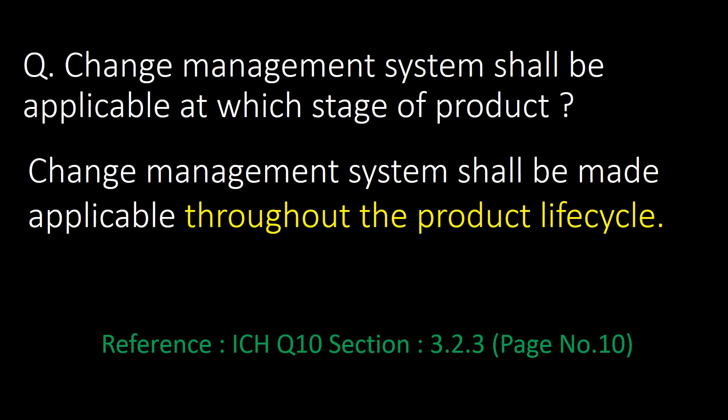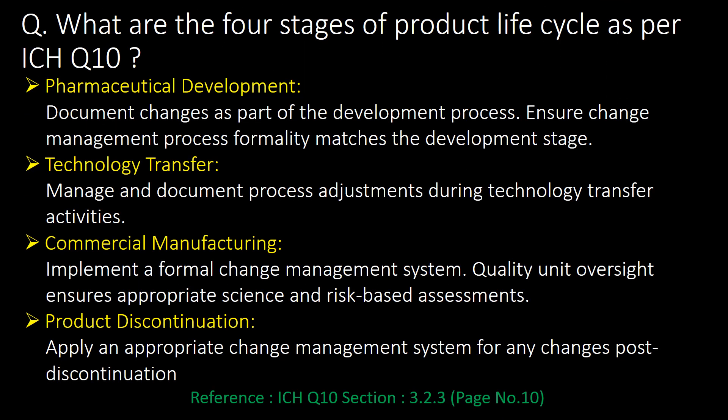Important question: at which stage of a product should the change management system be applicable? The change management system shall be made applicable throughout the product life cycle. What are the four stages of the product life cycle as per ICH Q10? Pharmaceutical development, technology transfer, commercial manufacturing, and product discontinuation are the four important stages.